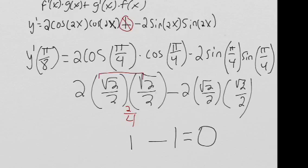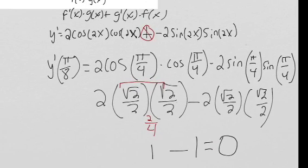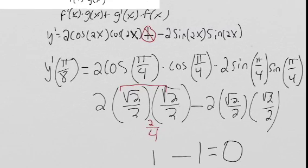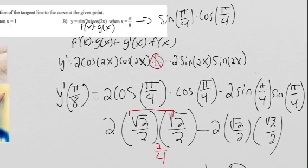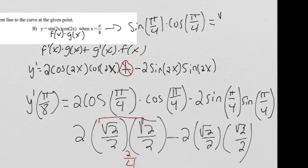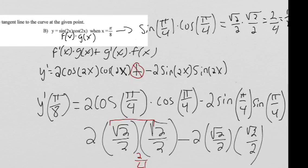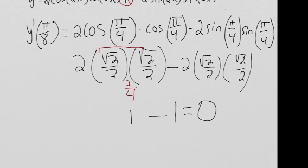Fortunately for us we don't have to keep going, because if the slope of the tangent line is just 0, let's first see what our function equals at the point. If we plug π/8 into our function, we get sine of 2 times π/8, which is π/4, so we get sine(π/4) times cosine(π/4). That's √2/2 times √2/2, which is 2/4, which equals 1/2. So at the point π/8, our function is equal to 1/2, and the slope of our tangent line is 0, meaning it's going to be a horizontal line.